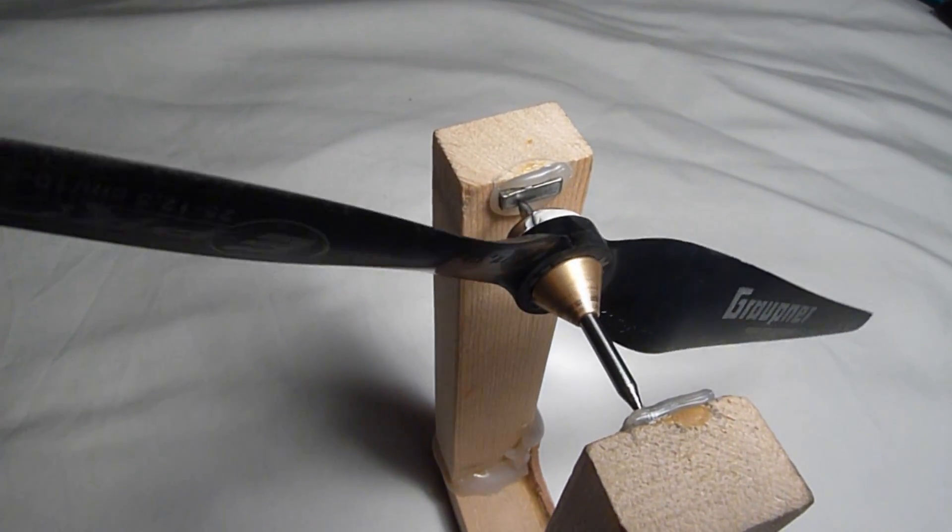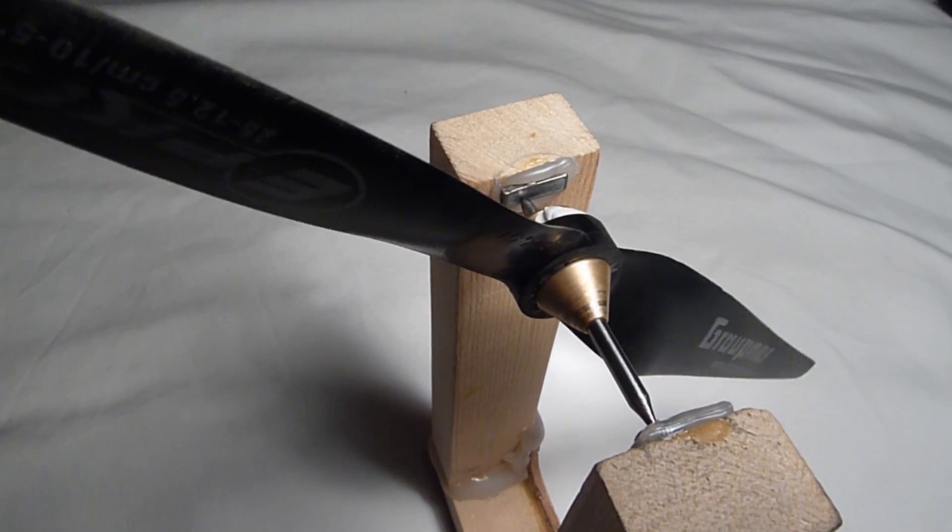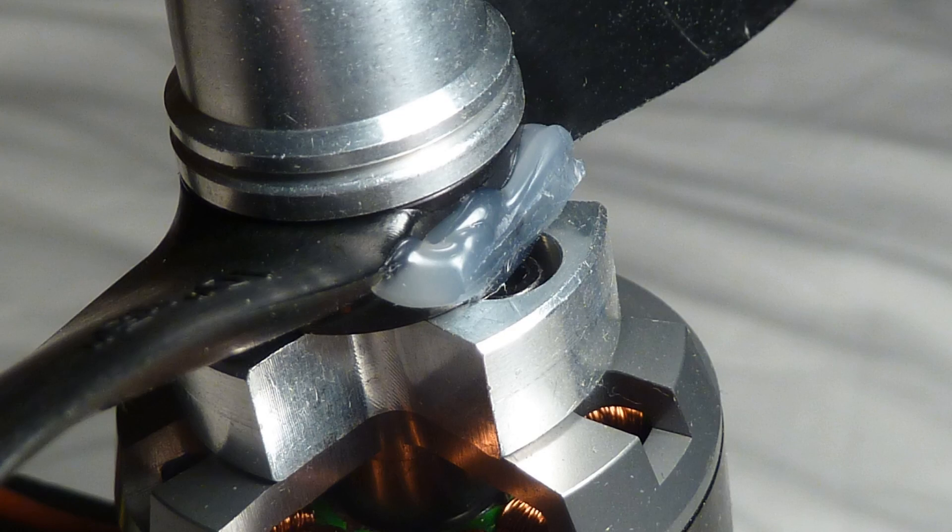I now balance the blade and the hub. The hubs even on higher quality props are often out. I add hot glue to the light side to balance the hubs.